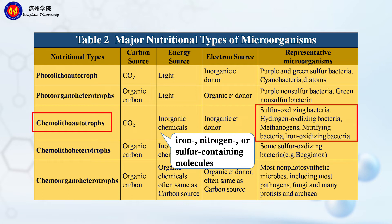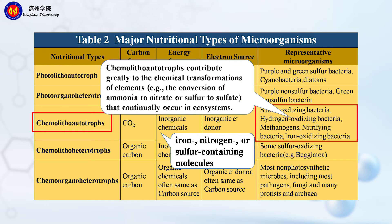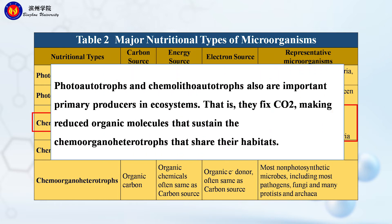Other representatives include hydrogen-oxidizing bacteria, methanogens, nitrifying bacteria, and iron-oxidizing bacteria. Chemolithol autotrophs contribute greatly to the chemical transformation of elements, such as the conversion of ammonia to nitrate or sulfur to sulfate. These transformations continually occur in ecosystems. Photo-autotrophs and chemolithol autotrophs are also important primary producers in ecosystems.